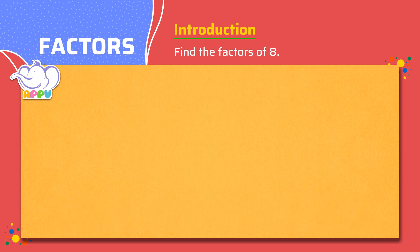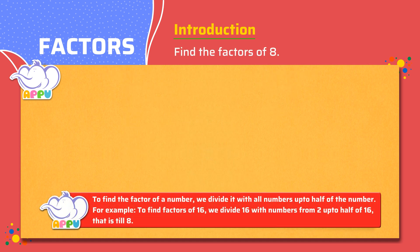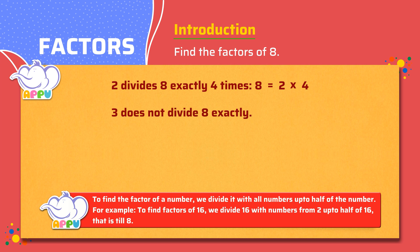Let's find the factors of 8. We know 2 divides 8 exactly 4 times. We write 8 equals 2 times 4. 3 does not divide 8 exactly. 4 divides 8 exactly 2 times. We write 8 equals 4 times 2. This is the same as 2 times 4, so we stop here.